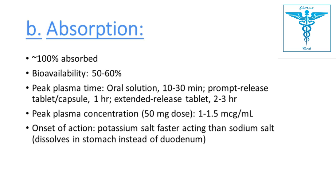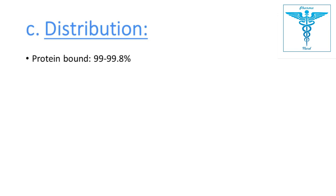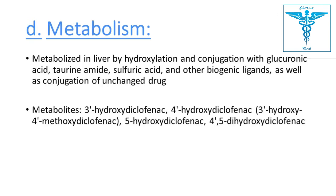Absorption of the potassium salt is faster than the sodium salt. Protein binding is 99%. Metabolism occurs in the liver by hydroxylation and conjugation with glucuronic acid, anthranilamide, sulfuric acid, and other biogenic ligands.